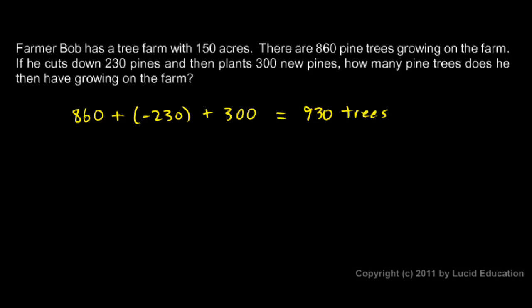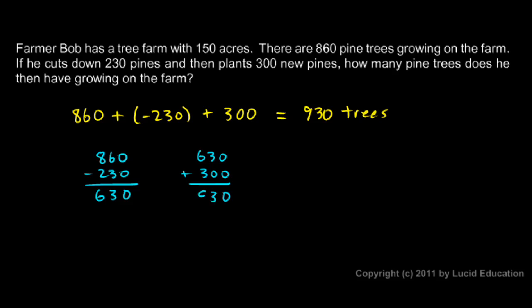And the way you get that — you can do it in multiple steps. Do your 860 minus 230: 6 minus 3 is 3, and 8 minus 2 is 6. So after he starts with 860 and cuts down the 230, he has 630 left. Then he takes that 630 and adds the 300 new ones that he plants, and you get 930. So 930 is your answer, and this is how you get it in two steps.